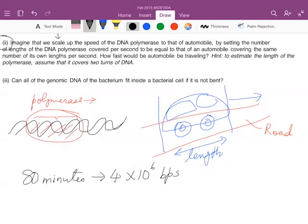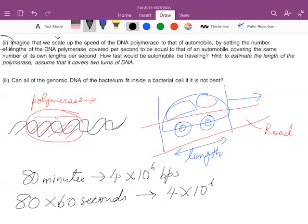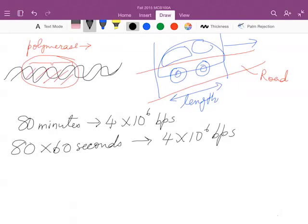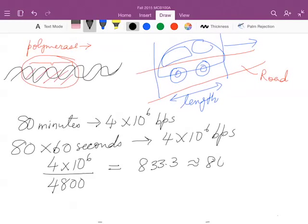To compute how many base pairs per second, we will say that this tells us that 80 minutes times 60 seconds are required to give you 4 × 10^6 base pairs. And so now it's easy to compute the speed of the polymerase in base pairs per second because we simply divide the total number of base pairs by the number of seconds, which is 4,800 in this case, 80 multiplied by 60. And that turns out to be 833.3 or roughly 800 base pairs per second.